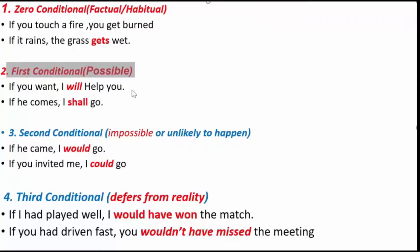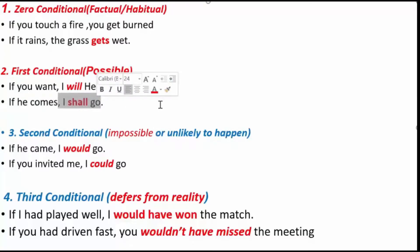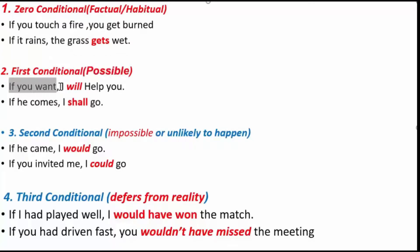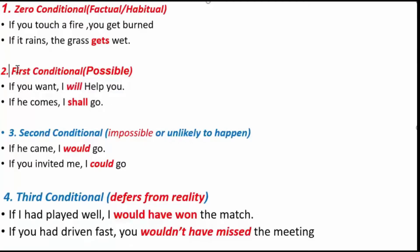Number two: First conditional. First conditional is used to talk about actions or events in the future that are possible. For example: if you want, I will help you — it is possible. If he comes, I shall go — there is nothing impossible. That is the first conditional. The if-clause is present indefinite, and the result clause uses will, shall, can, or may.